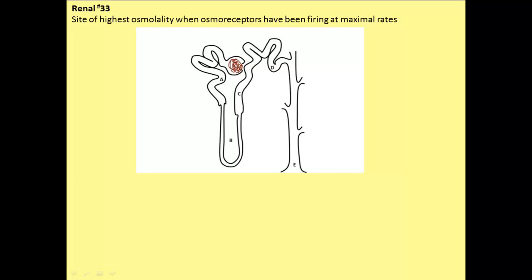For problem number 33 in the renal problem set, we are asked to determine where in the nephron we would find the highest osmolality when the osmoreceptors are firing at their highest rate.